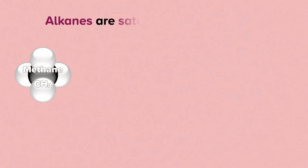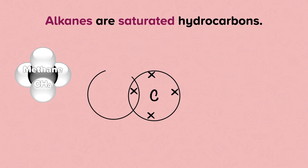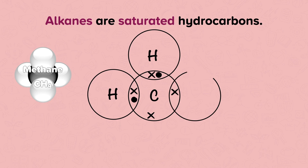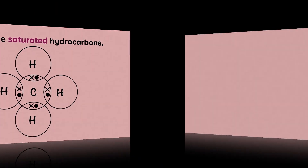Methane is the simplest alkane. Alkanes are saturated hydrocarbons. This is because each of the four electrons on carbon's outer shell is shared with a hydrogen atom in a covalent bond, so no more atoms can bond to it. This means that the carbon-carbon bonds in alkanes are single covalent bonds, so they contain the maximum possible number of hydrogen atoms per carbon atom.